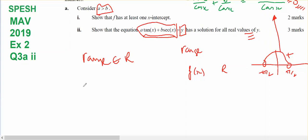I've got d/dx of a·tan(x) plus b·cos(x) to the negative one. And that's going to equal a·sec²(x) minus b·cos²(x) times negative sine(x).